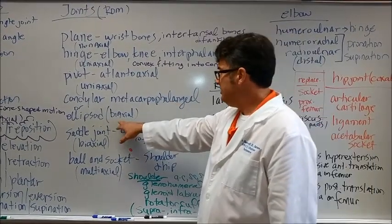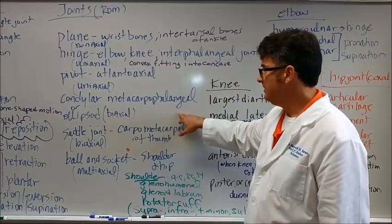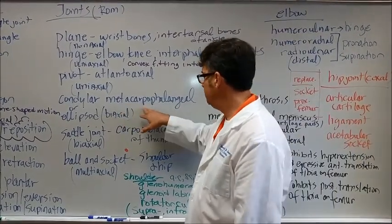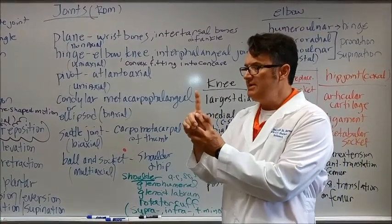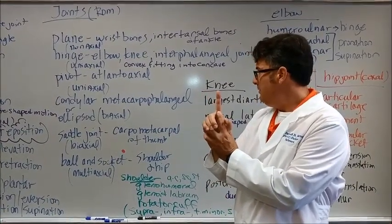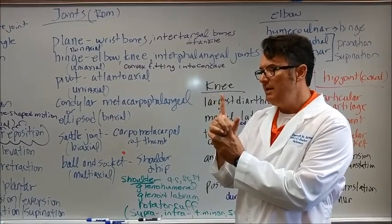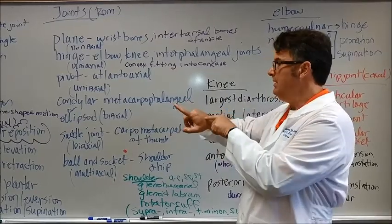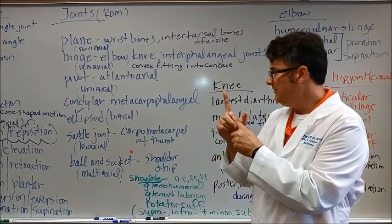Condylar or ellipsoid joints are biaxial and we're talking about the metacarpophalangeal joints. Everybody say metacarpophalangeal. So we're actually talking about metacarpophalangeals. We're talking about these joints right here, where this bone joins into the phalanx, the proximal phalanx.